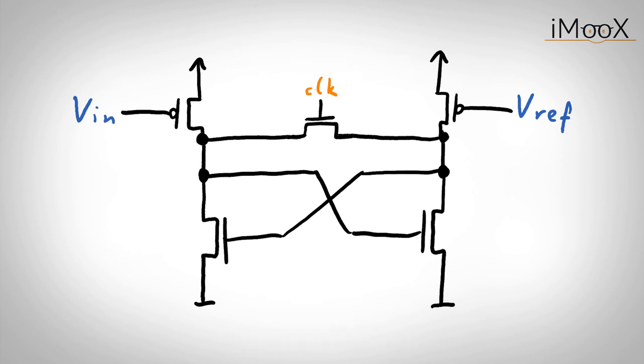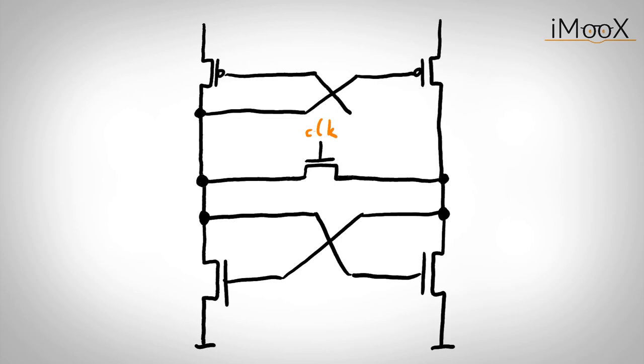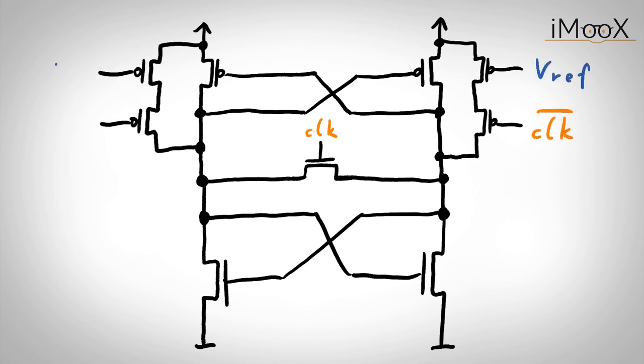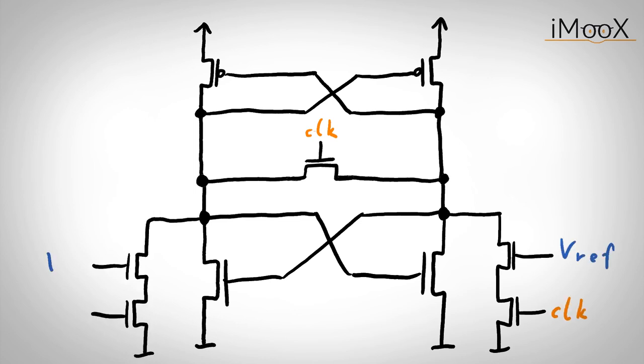To assure that no static current is flowing after the decision was made, we can extend our latch with another cross-coupled transistor pair using PMOS transistors. Furthermore, we need to add switches in series to the PMOS input transistors. We can also change the input transistors to be NMOS transistors without limitations in function.